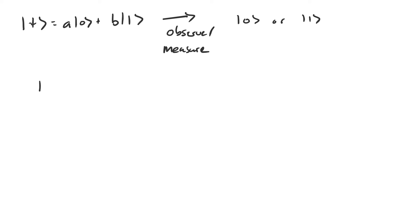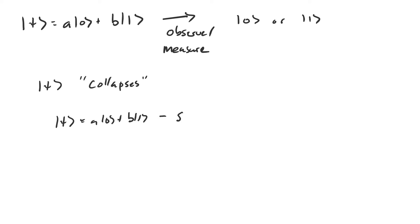We say that the state vector of the qubit collapses to 0 or 1 upon measurement. Prior to measurement, the state vector of the qubit can be a linear combination of the basis vectors 0 and 1, and this is called a superposition. But upon measurement, the state vector collapses to either 0 or 1, which are both called classical states, because they're two states that we can actually observe the qubit to be in.